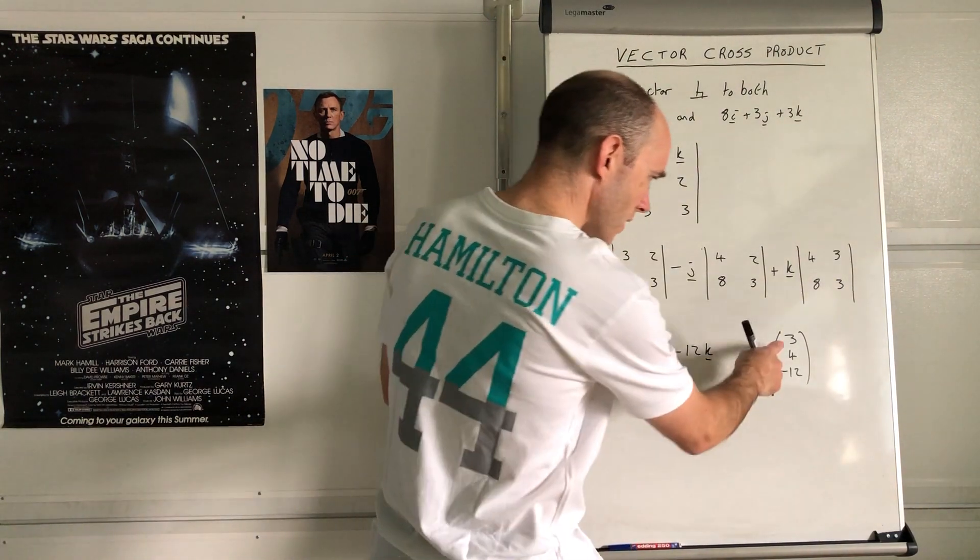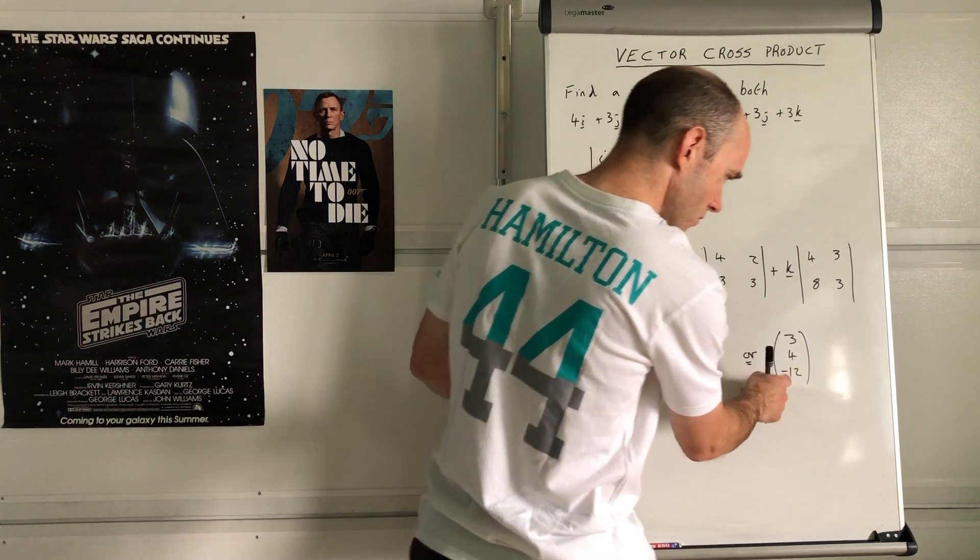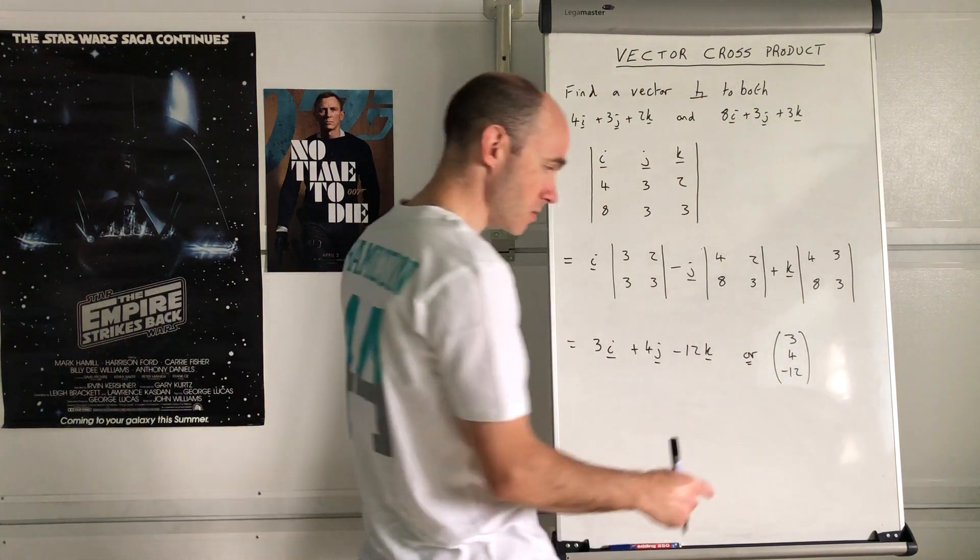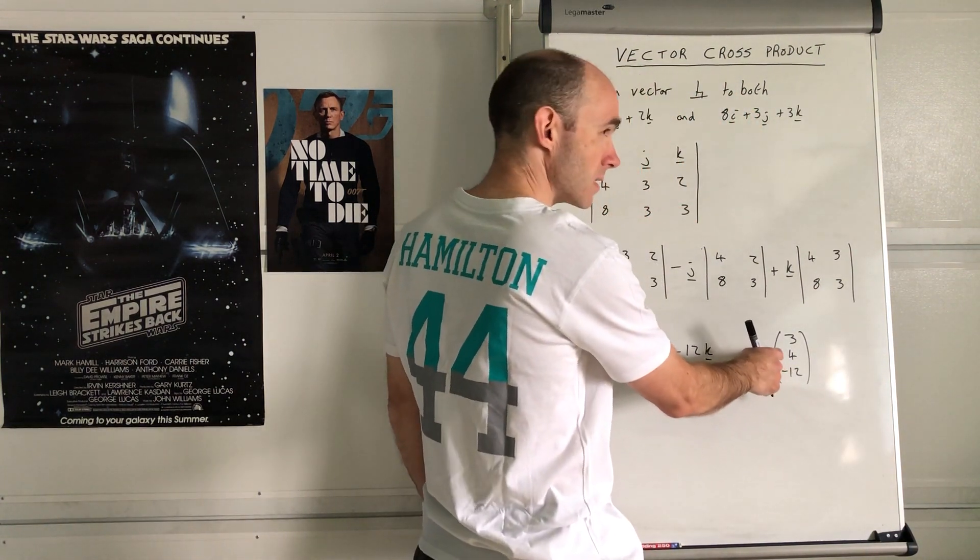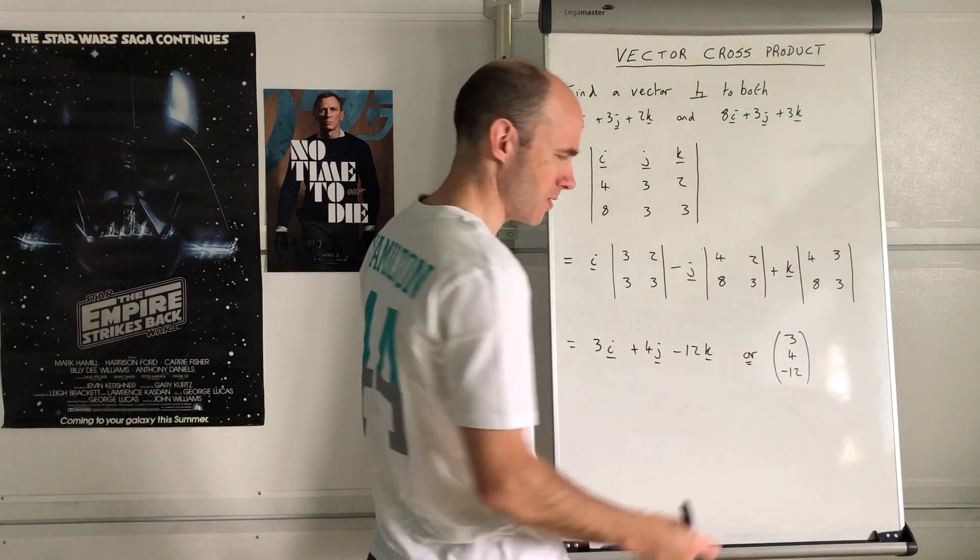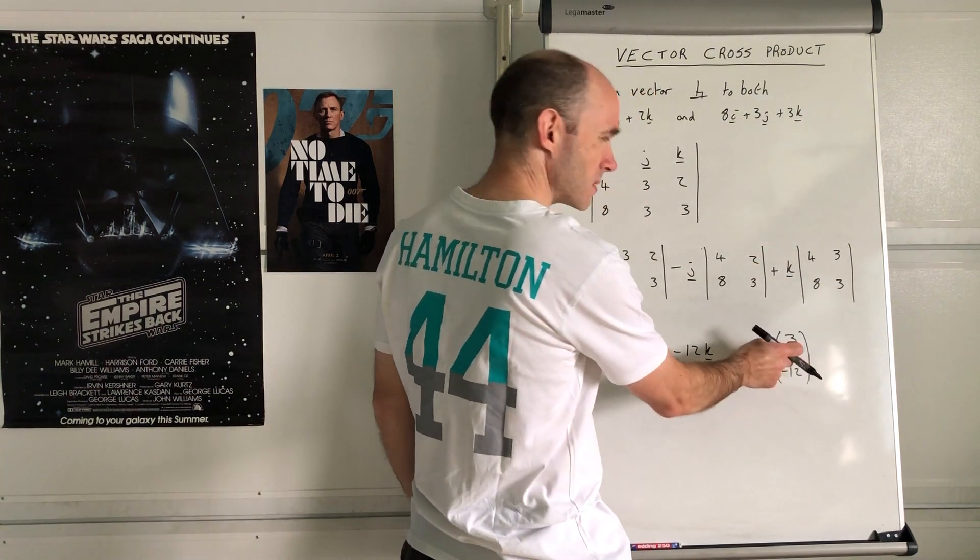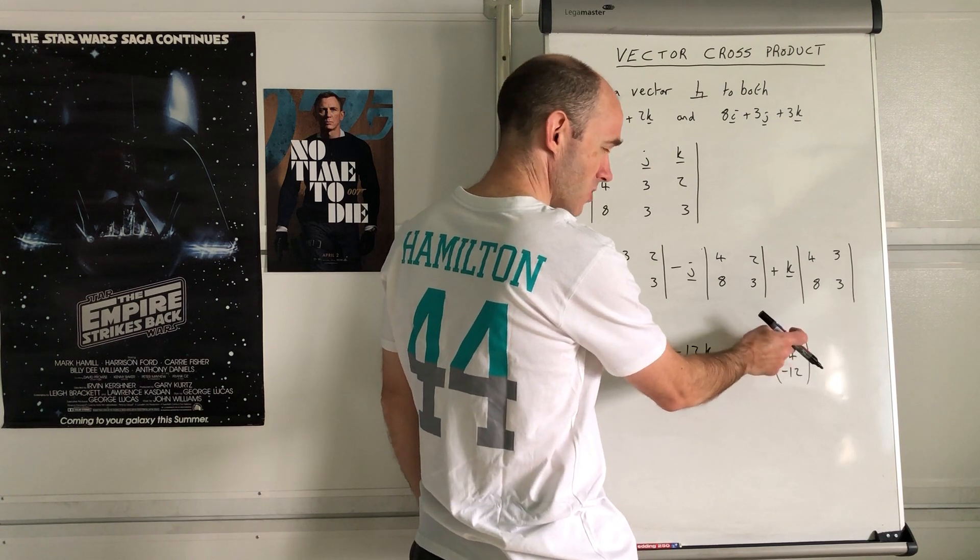The magnitude is using Pythagoras theorem: the square root of 9 plus 16 plus 144. 144 plus 16 is 160, plus 9 is 169. The square root of that is 13.